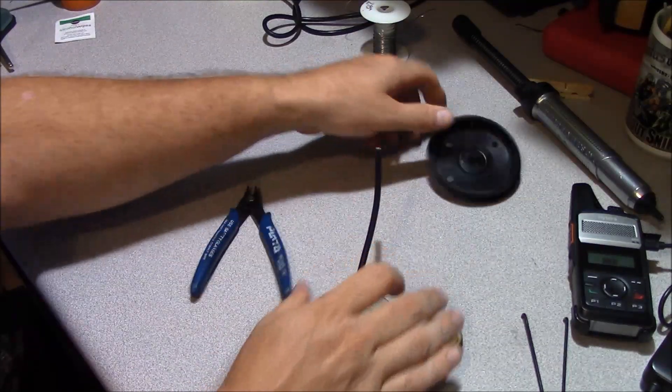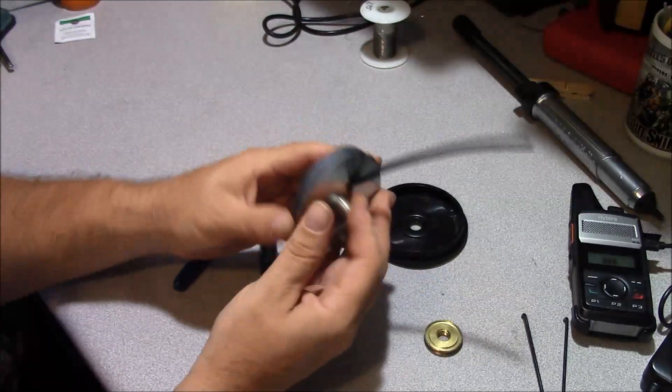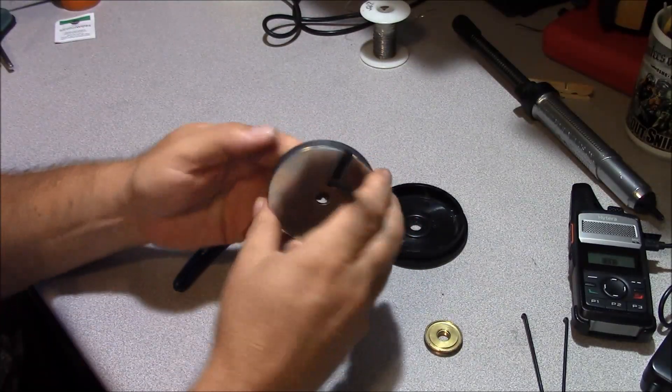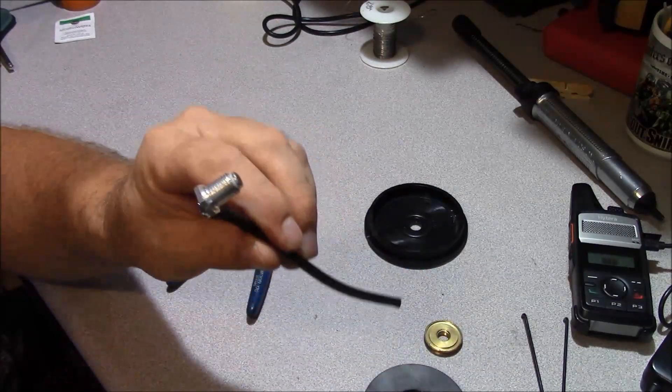And disassemble everything like this. Pull your cable. So then we've got our plastic base, and then our magnet, and then the center of our mount right here.